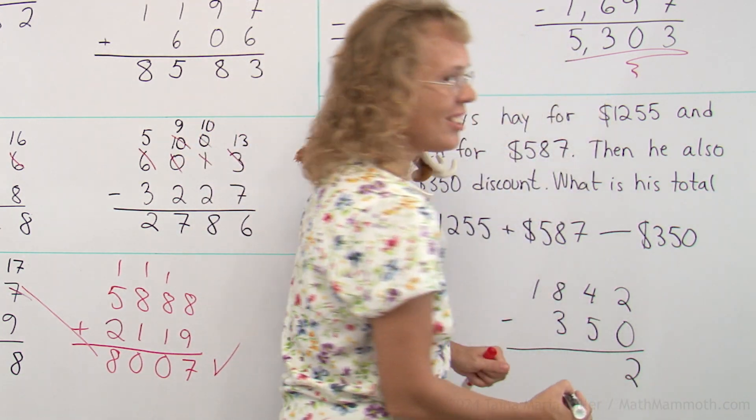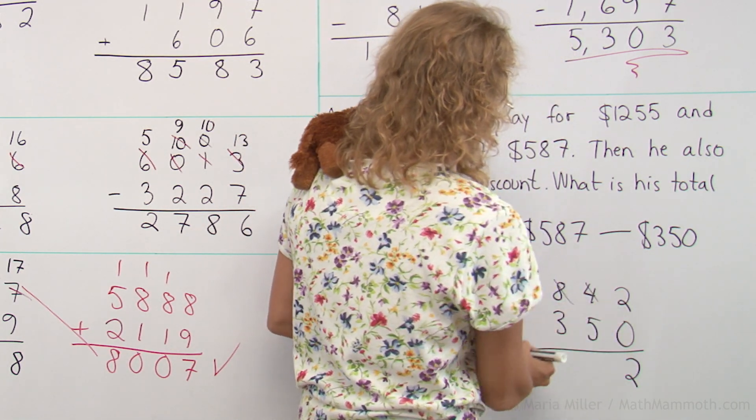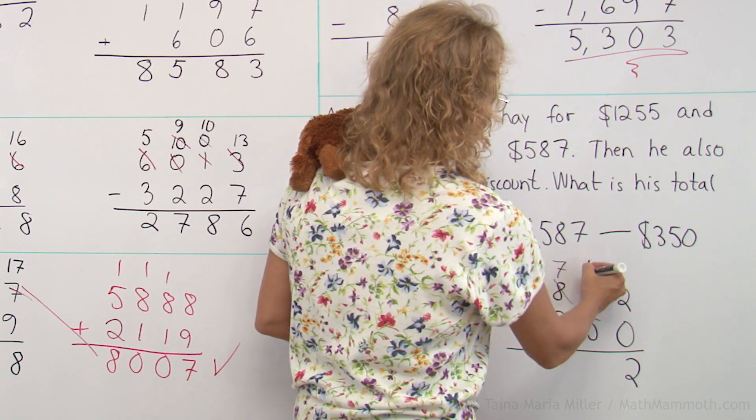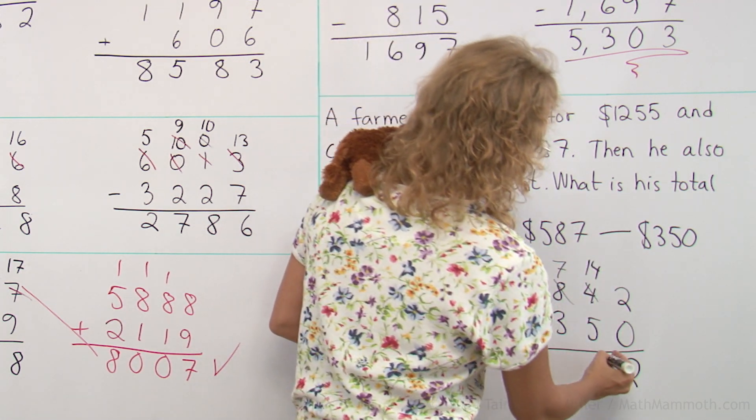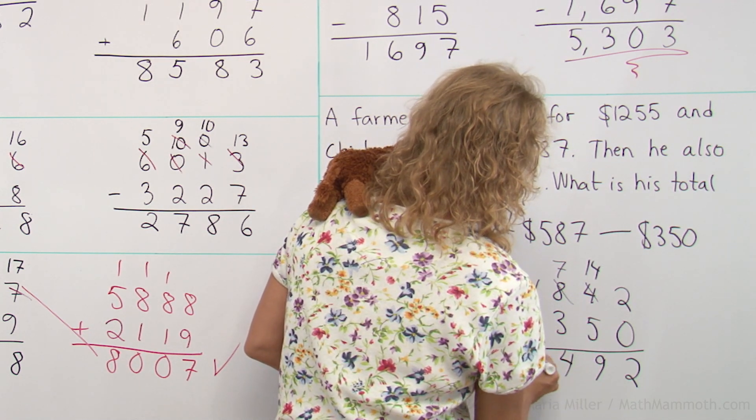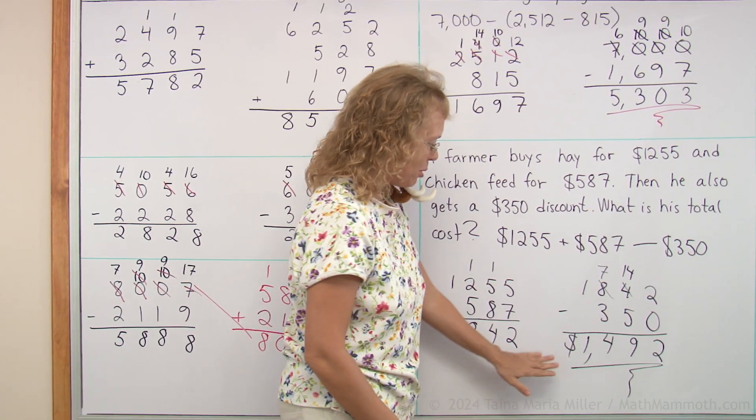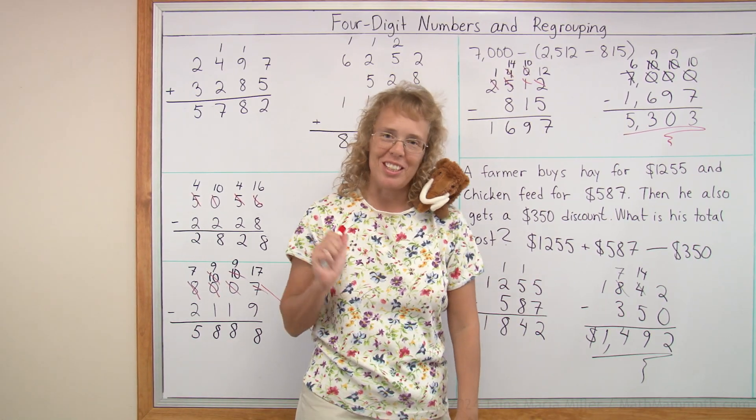Two minus zero is two. I didn't need to regroup once in the lesson. Four minus five, well here we do need to. Leaving seven here, 14 here. And then 9. And 4 and 1. So this is his total bill for the animal foods. And we're all done with this lesson.